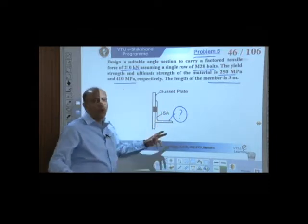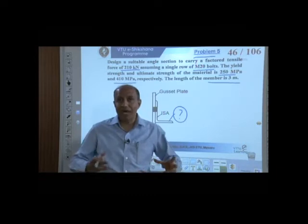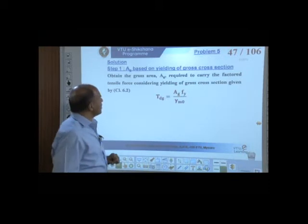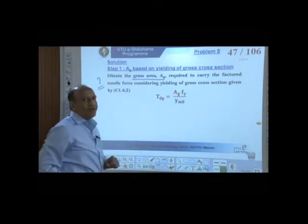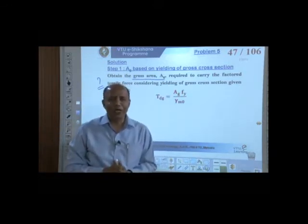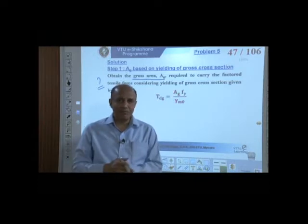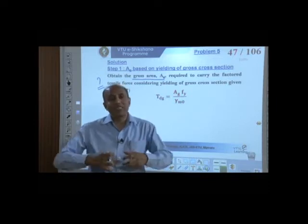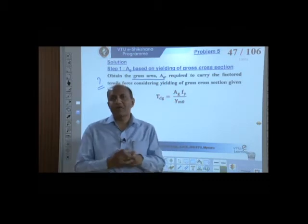We don't know what angle we are going to use. First, we must find the angle — arrive at the required area. We are talking about two criteria: Criteria 1 — yielding of gross section; Criteria 2 — net section rupture. Against both failure criteria, you arrive at the area individually, then pick the larger of the two values.